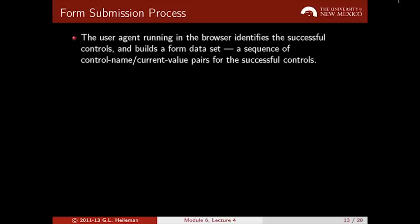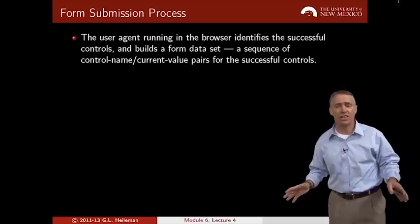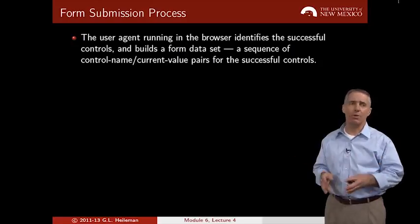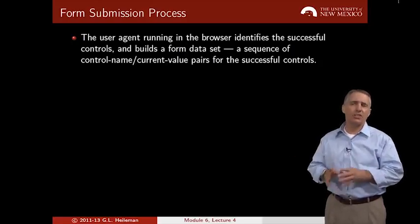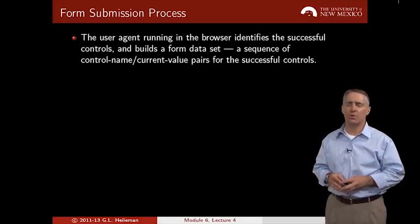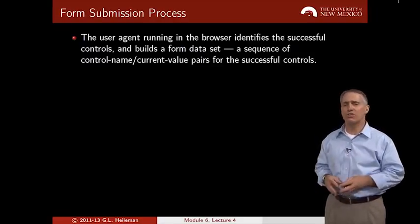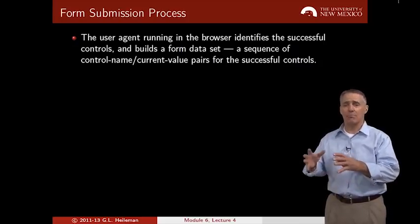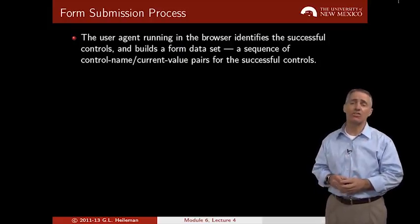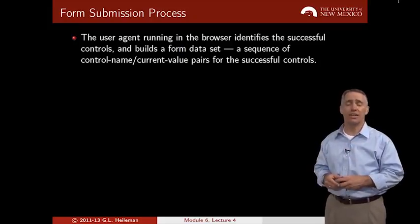Now let's talk about the form submission process. The user agent running in your browser identifies the successful controls. If something like a checkbox isn't checked, that control won't be sent. The user agent builds a data set of control name/current-value pairs and sends them either as part of the URL or as part of the message body in the case of a POST.